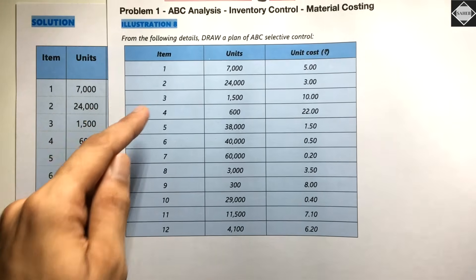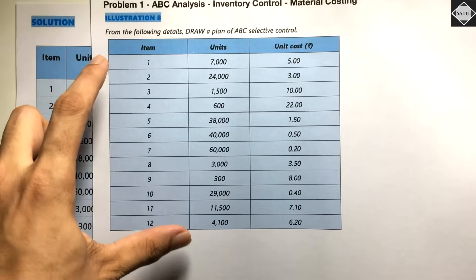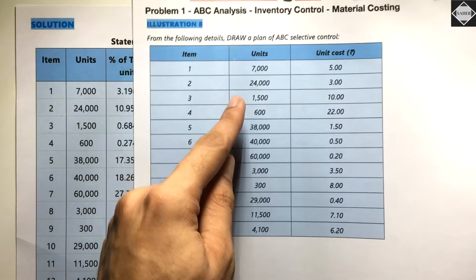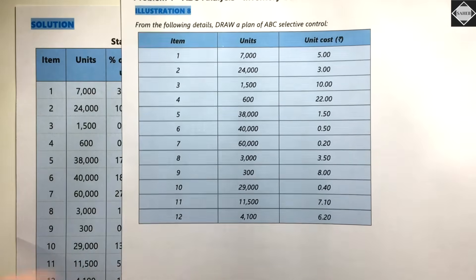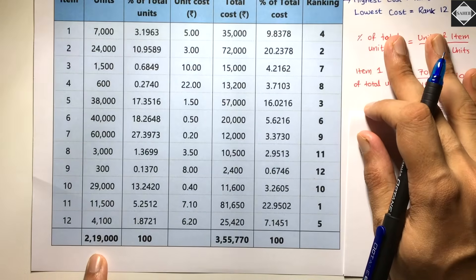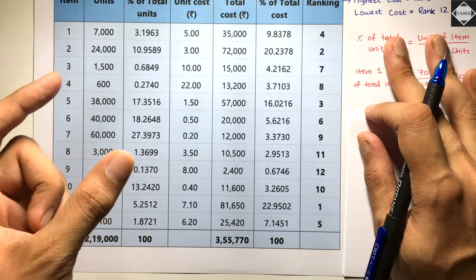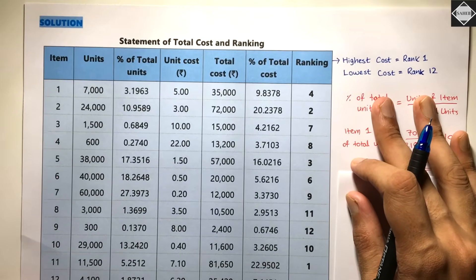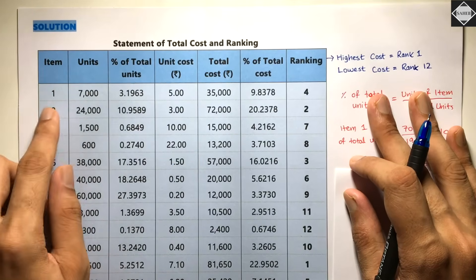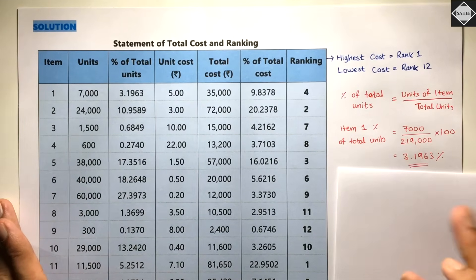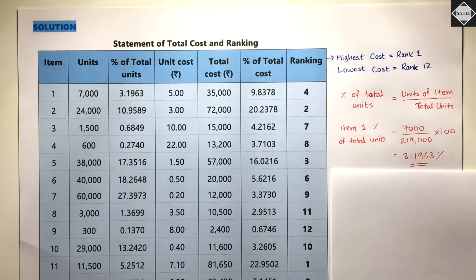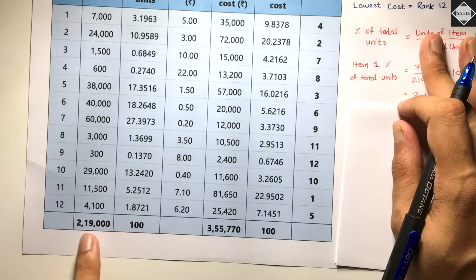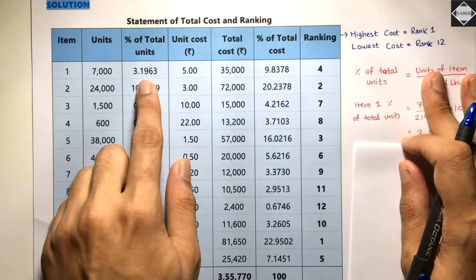First, take the item column — sometimes a code number or name is given — so items 1 through 12. Then take the units column as given in the question: 7,000; 24,000; 1,500; and so on. Take the sum of all units, which equals 2,19,000. This is the total inventory in quantity. Next, calculate the percentage of total units for each item — that is, how much each item comprises of the total inventory.